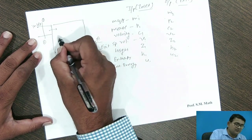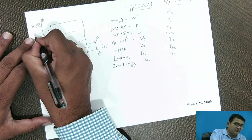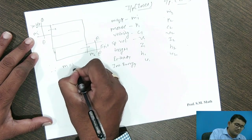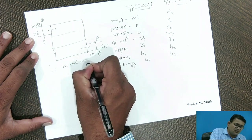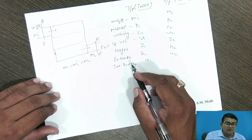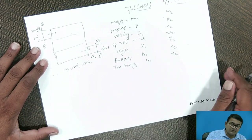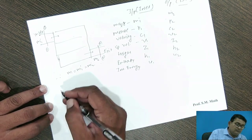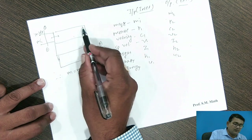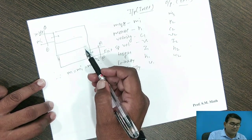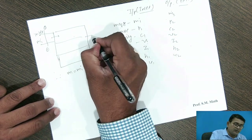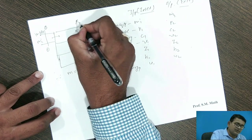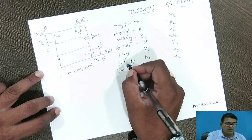When mass is entering the system and the same mass is leaving from the system, m1 equals m2, so the mass m equals m1 equals m2. When you know all these values, for the steady flow system, you have shaft work and heat transfer — supply or rejection. By the first law of thermodynamics, Q equals U plus W, where U is the internal energy of the system.